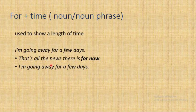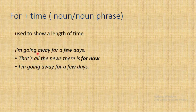Next: 'for' plus time, used to show a length of time. 'I'm going away for a few days' — I will be away for several days. 'That's all the news there is for now.' So 'for' here indicates the duration of time — how long something lasts.